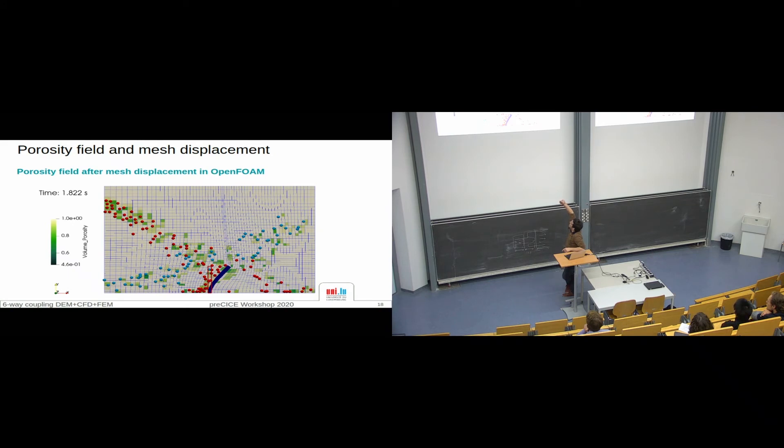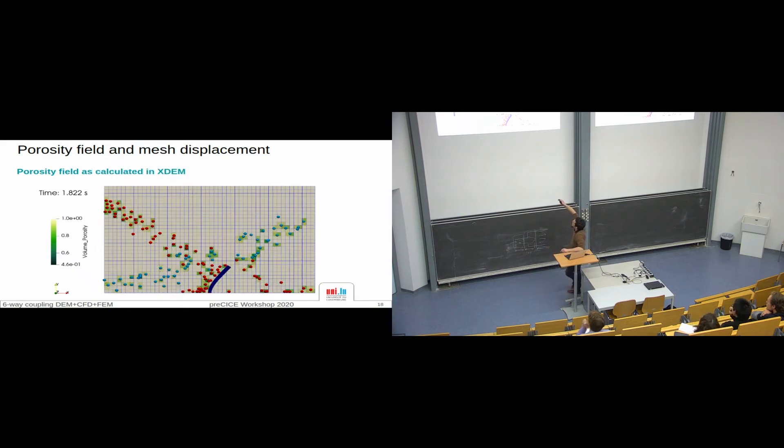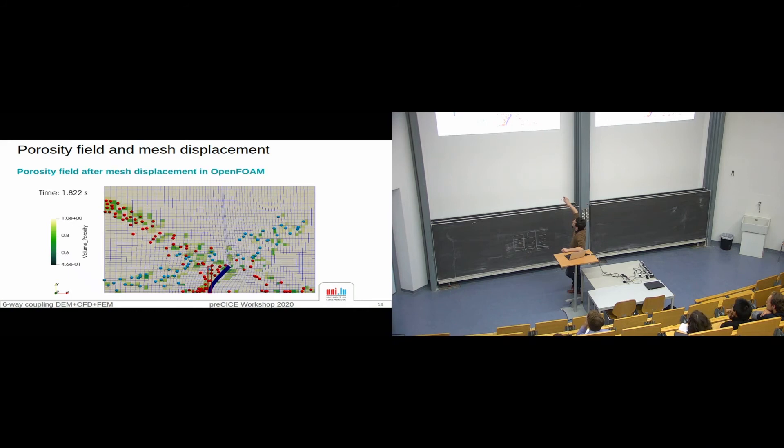Here, it's exactly the same computations but after the mesh displacement in OpenFOAM. As we have this mesh displacement, the grid is not perfectly the same, so everything is shifted to the right. For now, we don't have much time to investigate this problem, but we have to find a way to fix it.